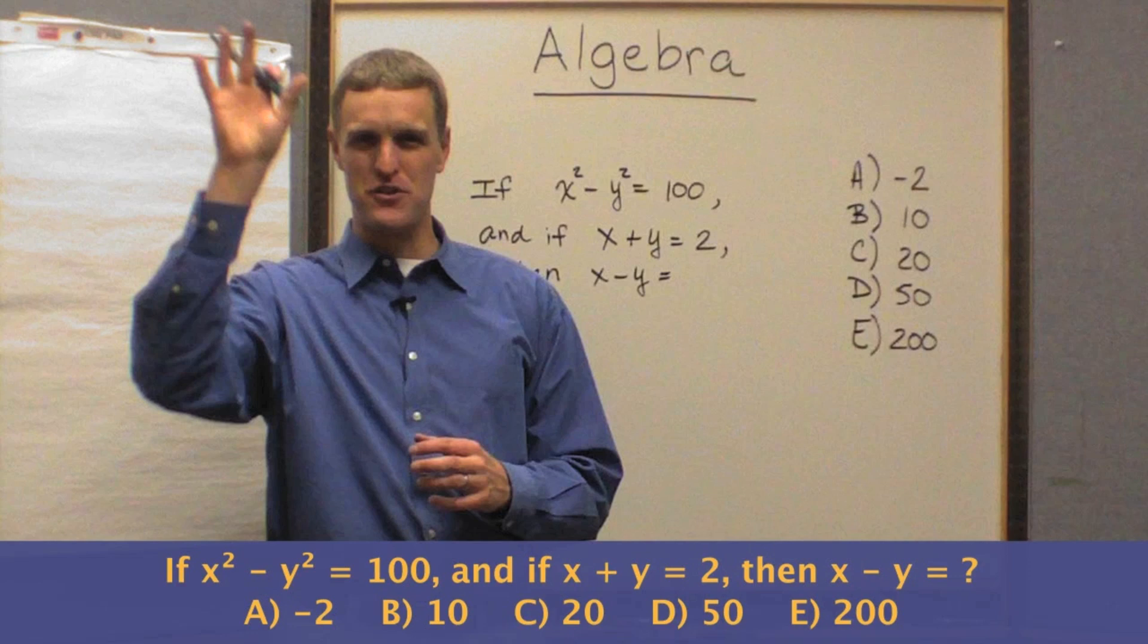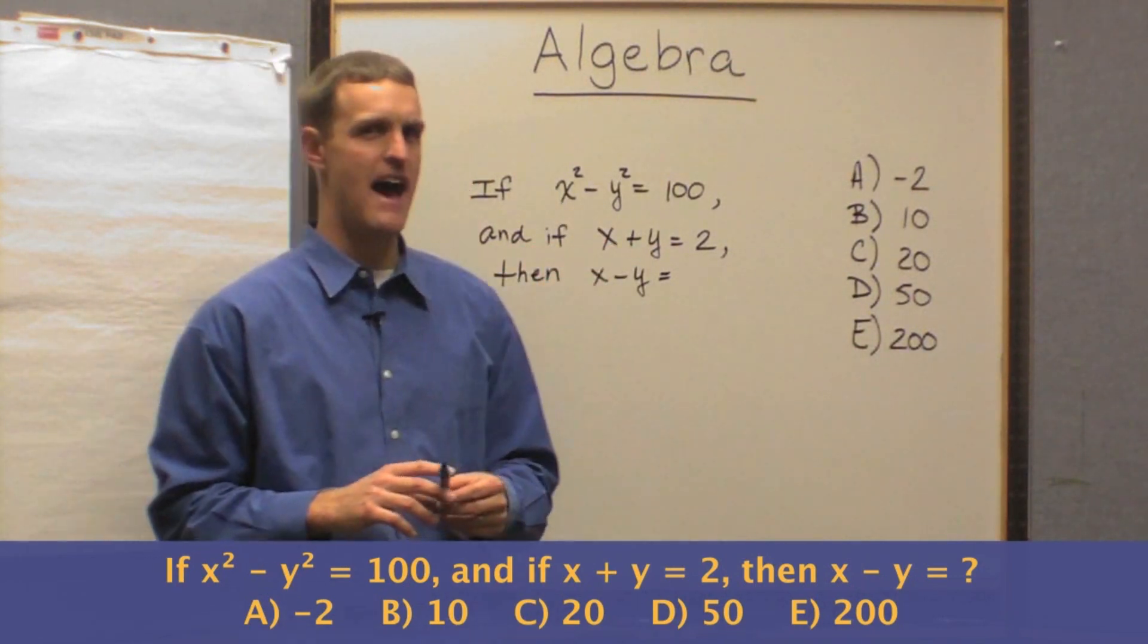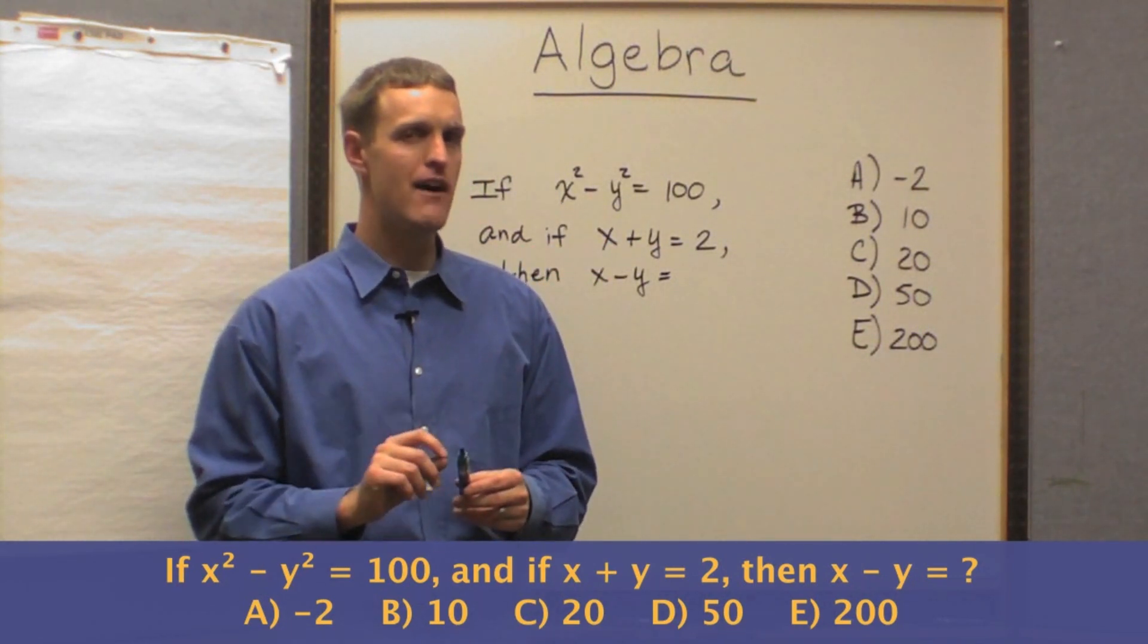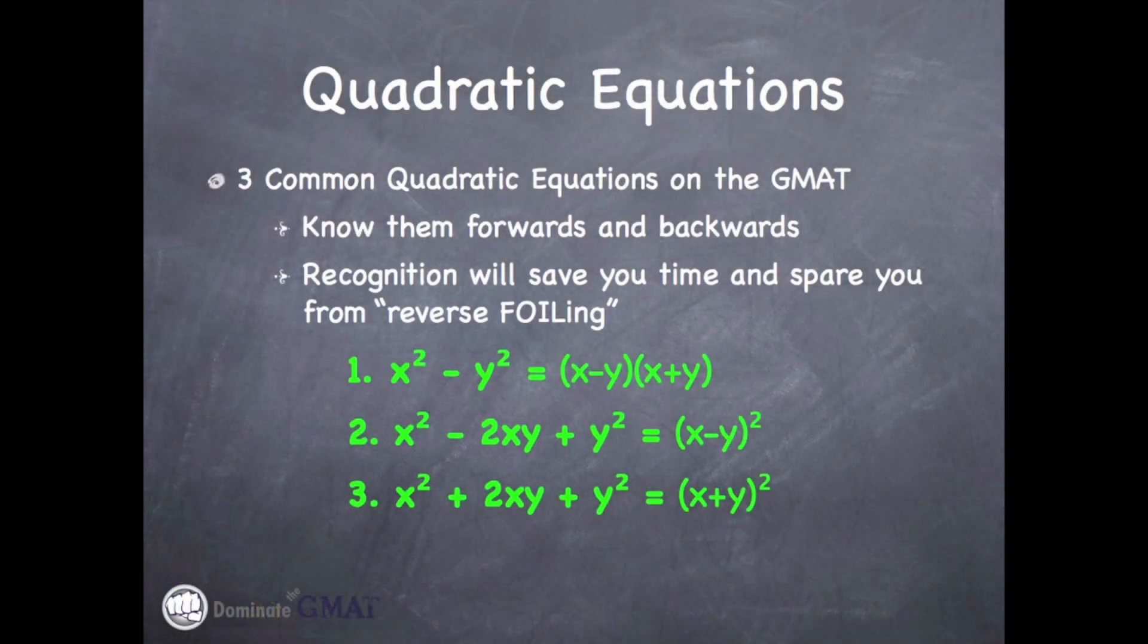And you should have had, again, those light bulbs going on, those red flags going up, as soon as you saw that. Because you should have recognized that as one of our common quadratic equations, right? At the very worst, you should have been able to reverse foil it, but as soon as you see a square term, light bulbs should be going off. And what do we see?